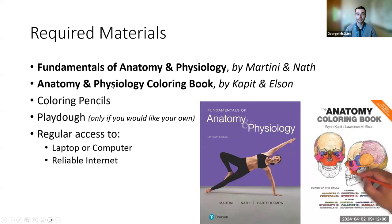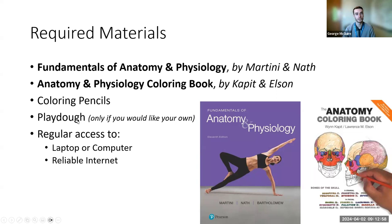Not required but highly recommended is the Anatomy and Physiology Coloring Book by Kapit and Elson — there are points available from coloring book pages. You'll also need coloring pencils for both the coloring book and occasional lab use. We do Play-Doh models in lab; I have plenty to share, but you can bring your own. Finally, you'll need regular access to a laptop or computer with reliable internet — a phone or tablet with the Canvas app is not sufficient, as the app misses content and can't display everything properly.